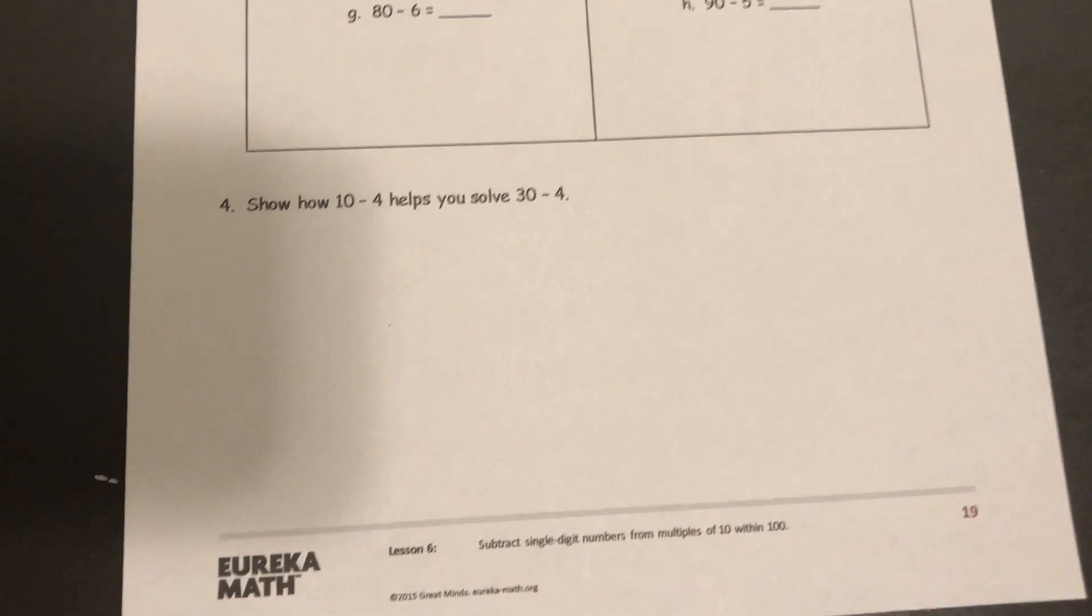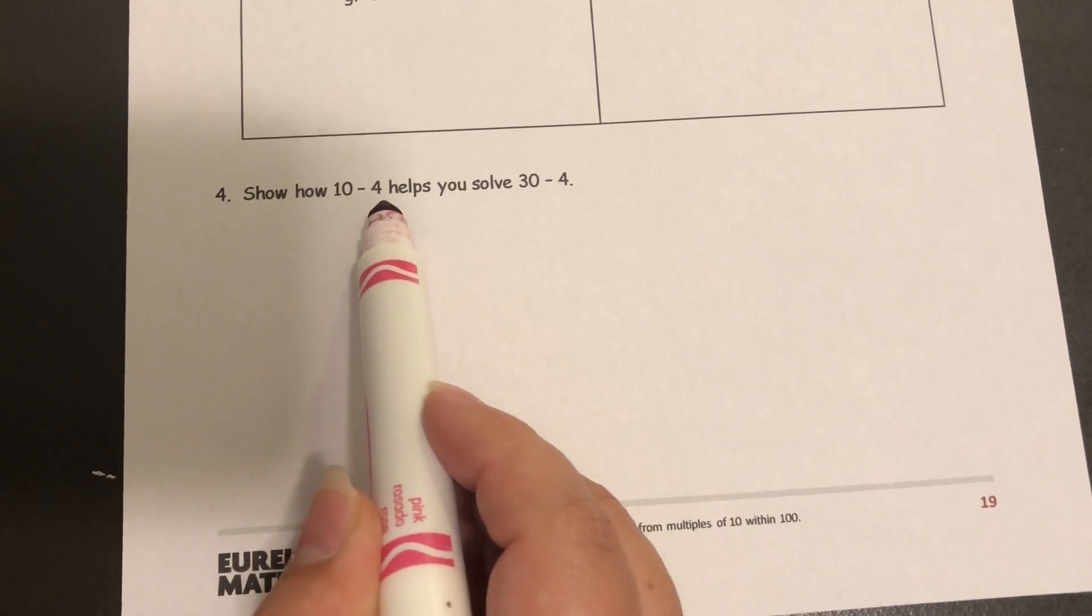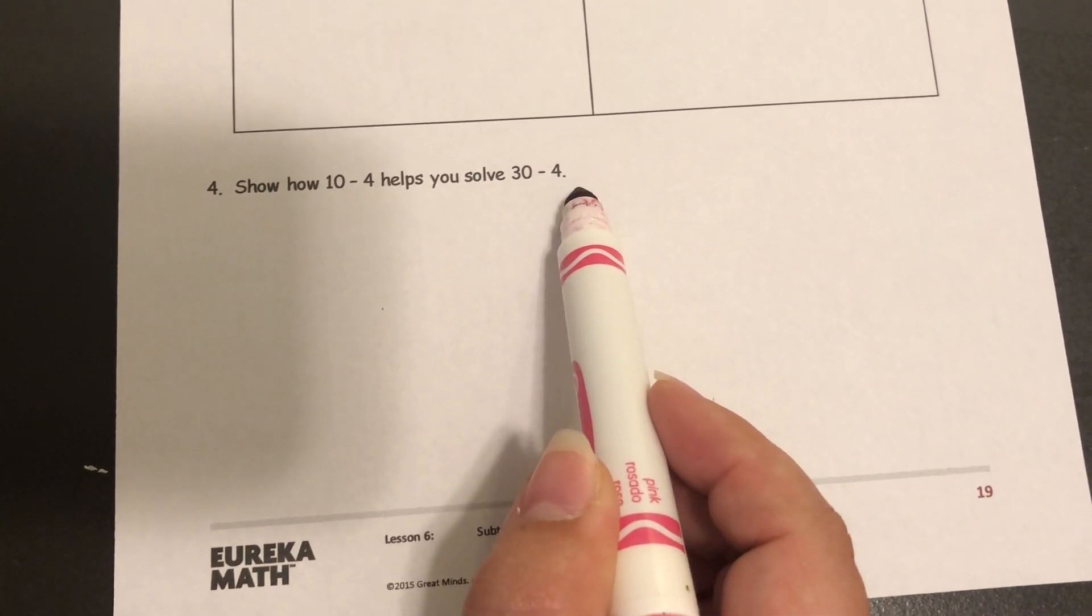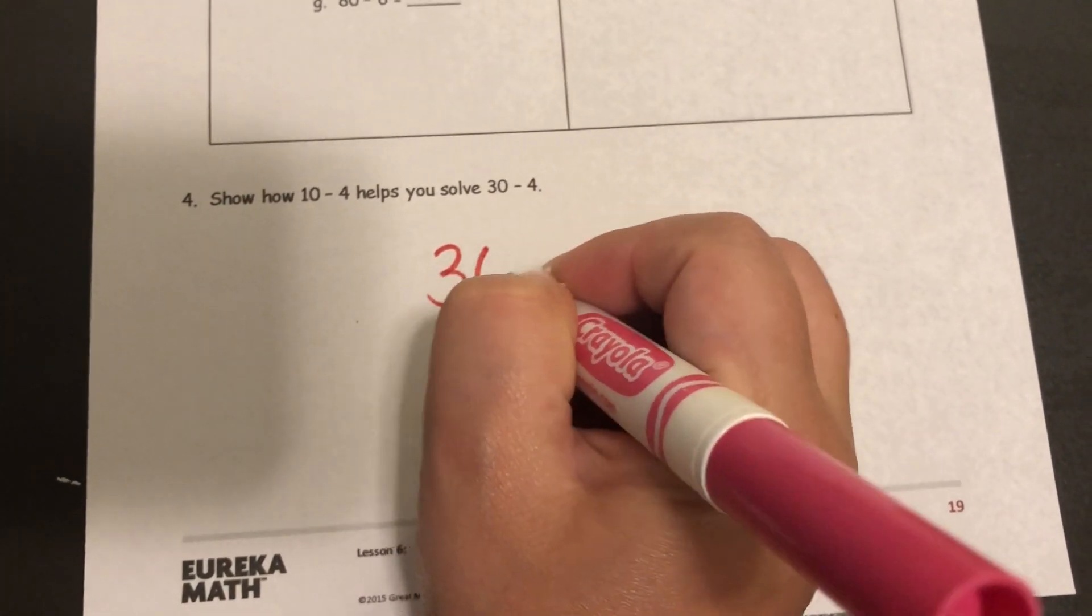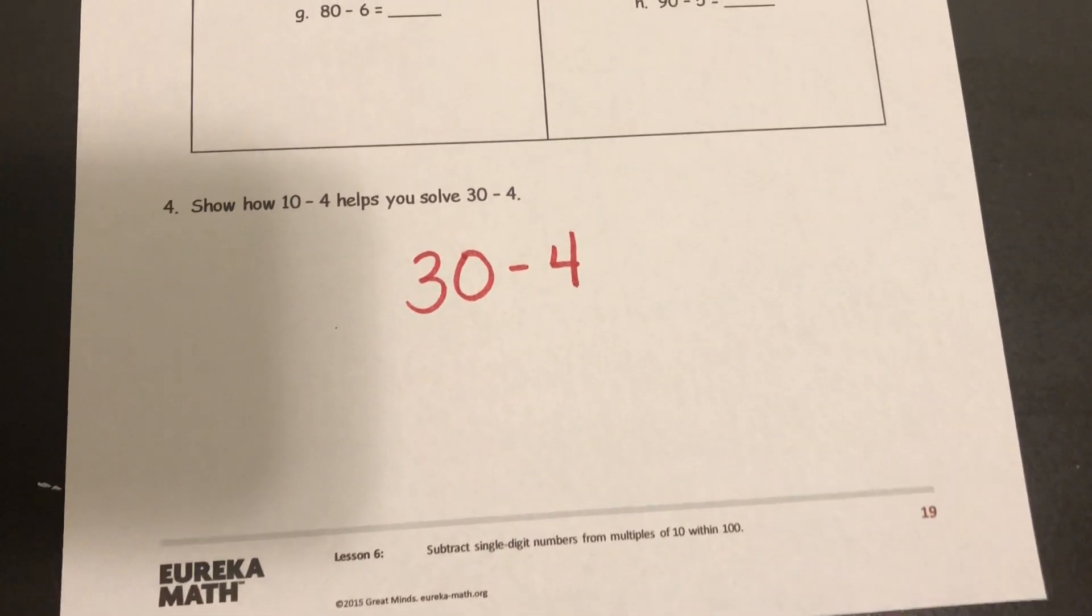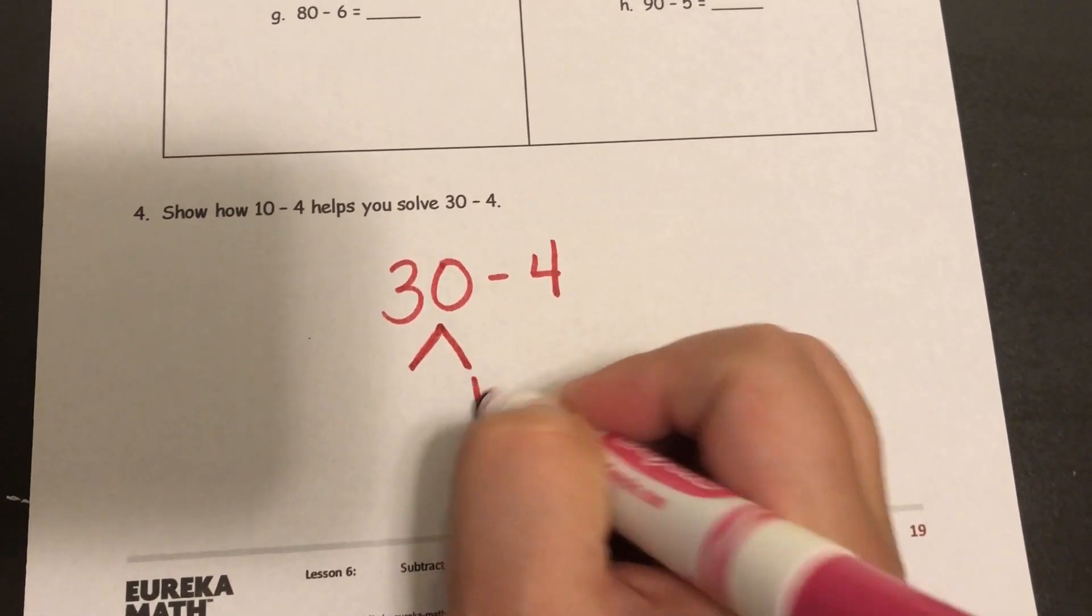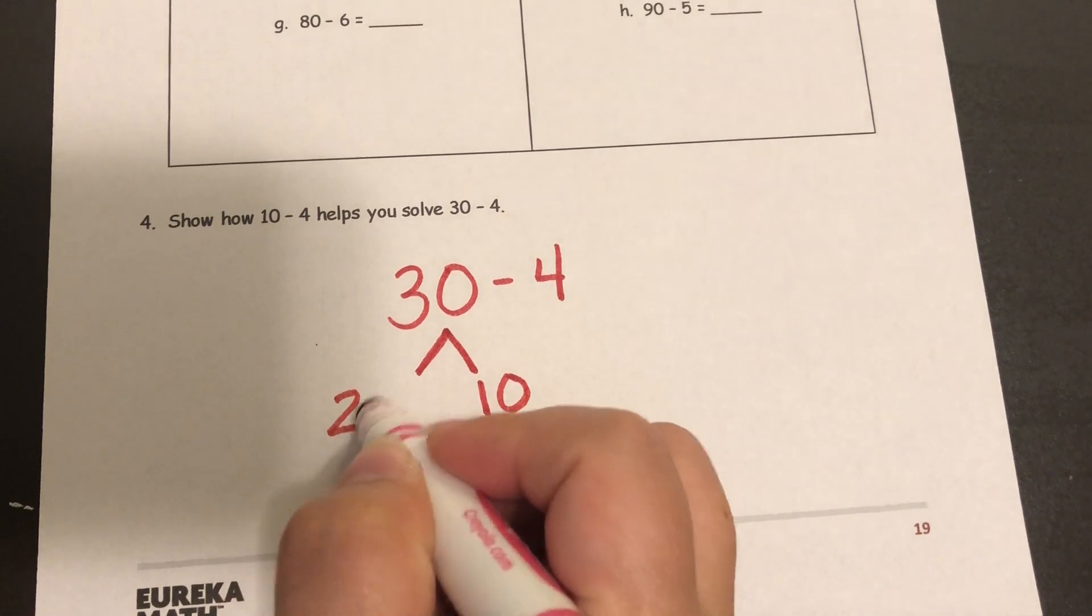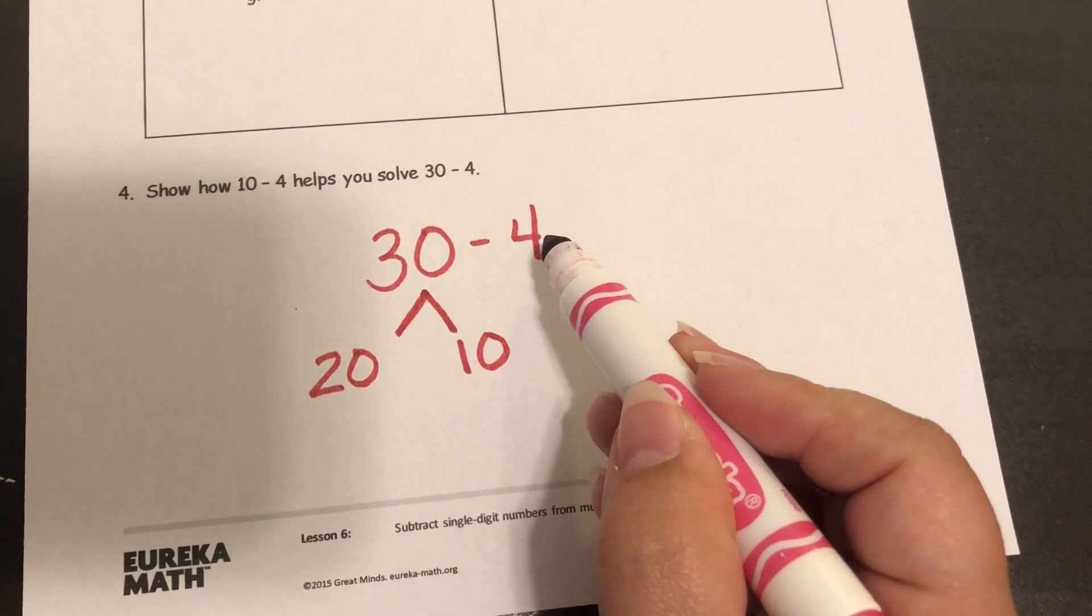The very last one is a word problem. It says show how 10 minus 4 helps you solve 30 minus 4. So they just want you to start with 30 minus 4 and then use your take out a ten strategy. Because when you take out that ten you will eventually be solving 10 minus 4 first.